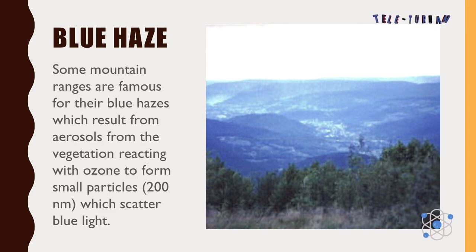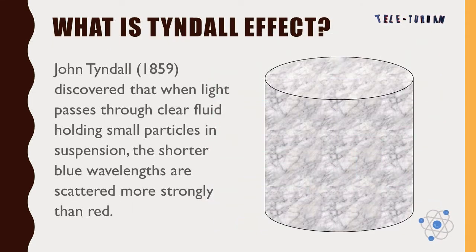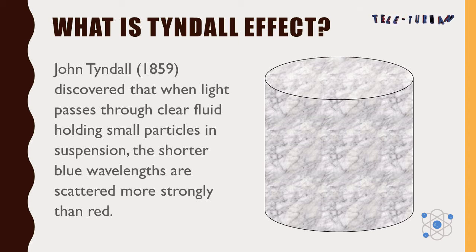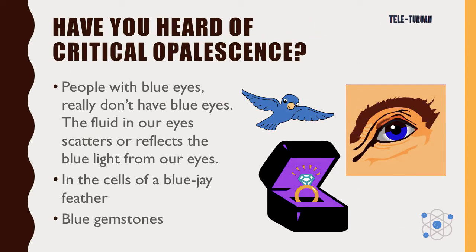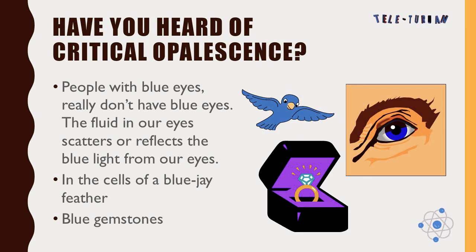Some mountain ranges are famous for their blue hazes, which result from aerosols from vegetation reacting with ozone to form small particles that scatter blue light. John Tyndall, in 1859, discovered that when light passes through a clear fluid holding small particles in suspension, the shorter blue wavelengths are scattered more strongly than red. People with blue eyes don't actually have blue pigment — the fluid in your eyes scatters or reflects blue light.